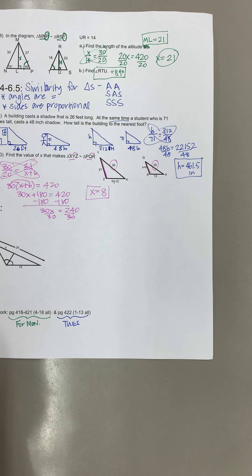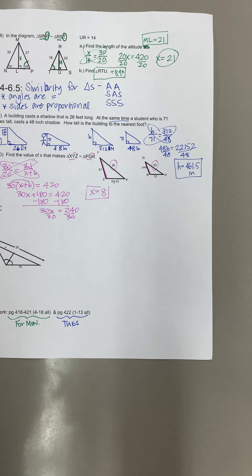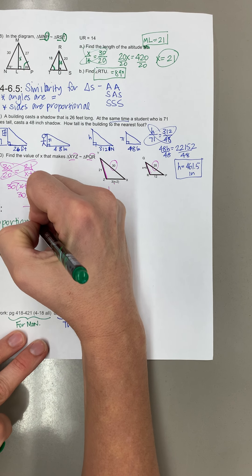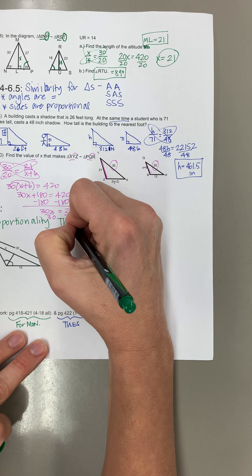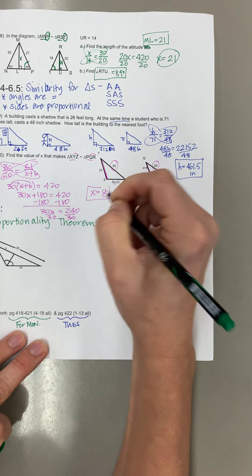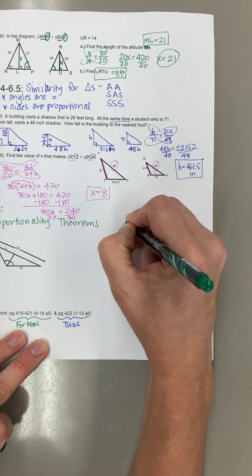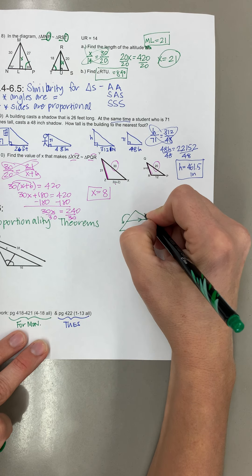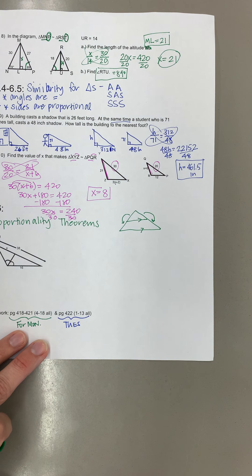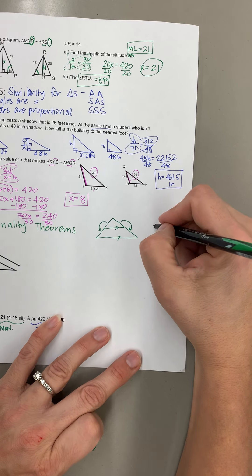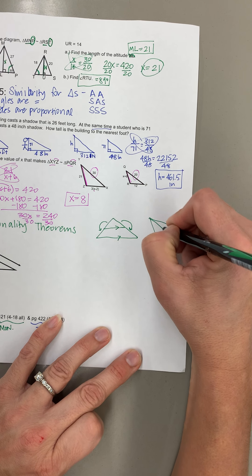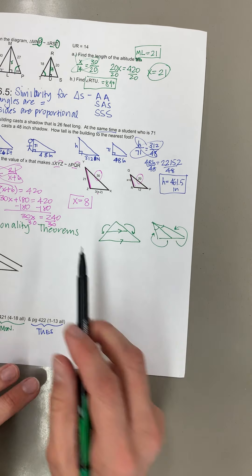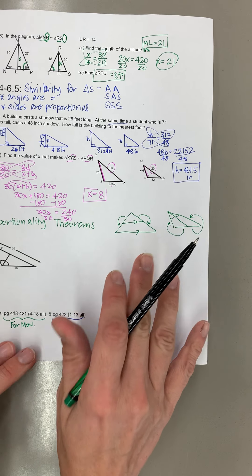And then the last rule we learned about was proportionality theorems. And so there were two different ones we learned about here. Was basically if these are parallel, we learned that this one is proportional here and this one is proportional here. Or we also learned if we have an angle bisector. This one tells us that one, this one tells us that one. So those were two different drawings that we saw with this section.